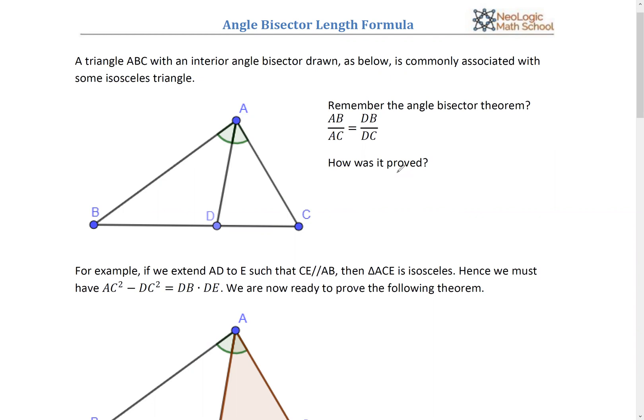Angle bisectors very often could be associated with some sort of isosceles triangle if we add some parallel lines. And here's what I mean. So this is the angle bisector AD. So this angle, AD bisects angle BAC.